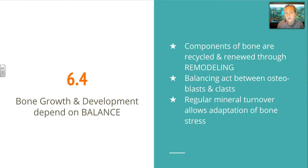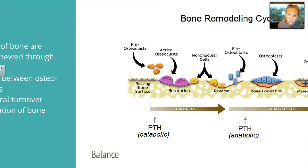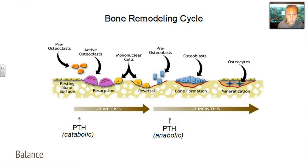Section 6-4 covers growth and development and how we depend on a balance of osteoclasts and osteoblasts. The components of the bone are continually recycled and renewed through a process called remodeling performed by these cells. Regular mineral turnover allows your bone to adapt to stresses as you age. Osteoclasts break down resting bone to recycle and renew it with new minerals, with the help of osteoblasts.